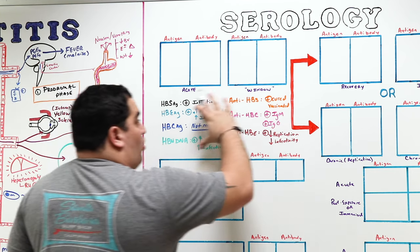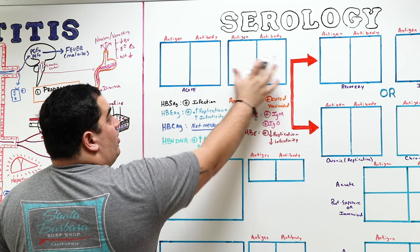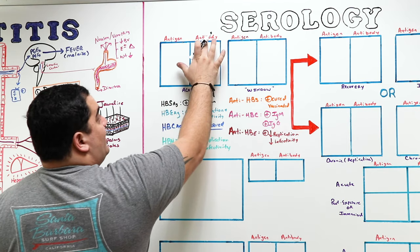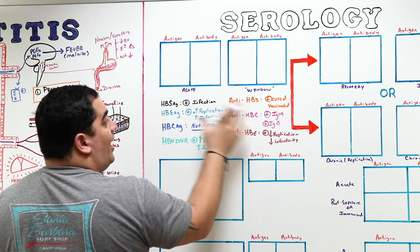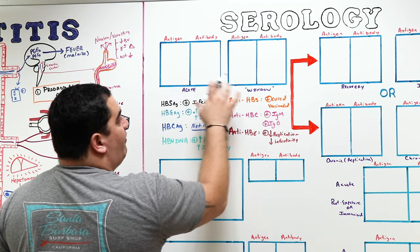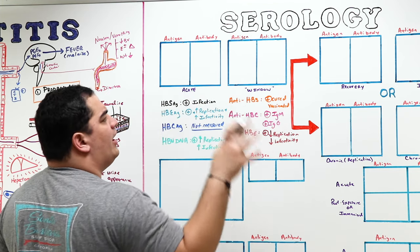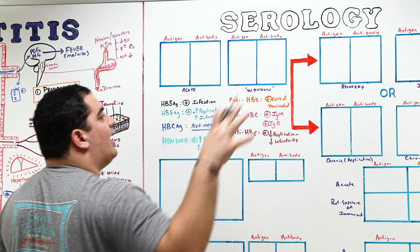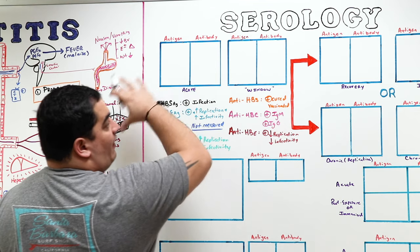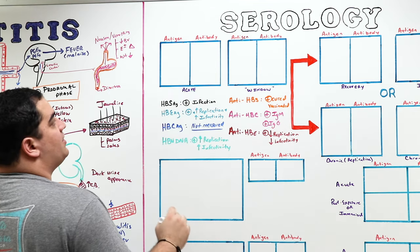Now that we have all of this set up, we're going to use charts with antigens on one side and antibodies on the other, and look at them in different phases: acute infection, the window period, recovery, immunization, and chronic infection. We'll do this for the hepatitis B virus.